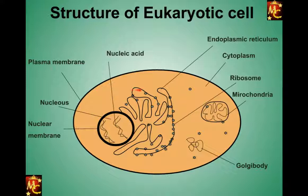This structure sometimes spreads throughout the cell and sometimes only part of the cell — it is called the endoplasmic reticulum, or ER for short. The endoplasmic reticulum has several small granule-type structures attached to it; these are ribosomes. Ribosomes are either spread throughout the cytoplasm or attached to the endoplasmic reticulum, and they are involved in protein synthesis.